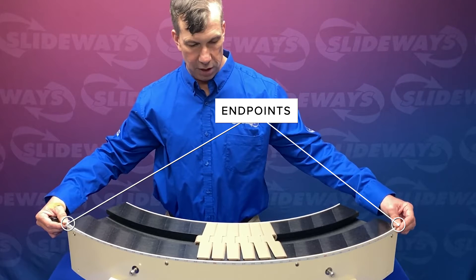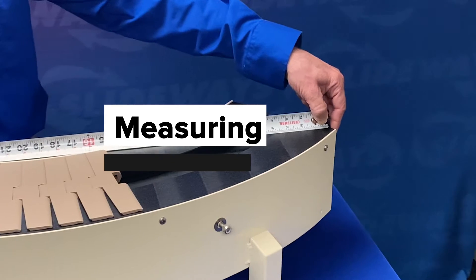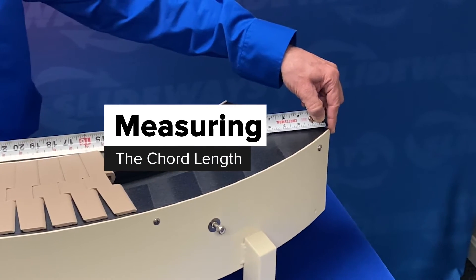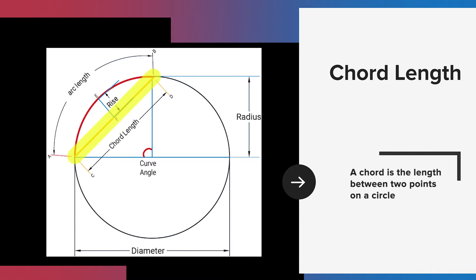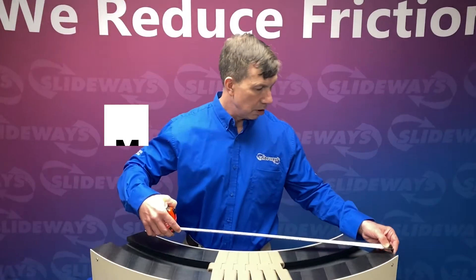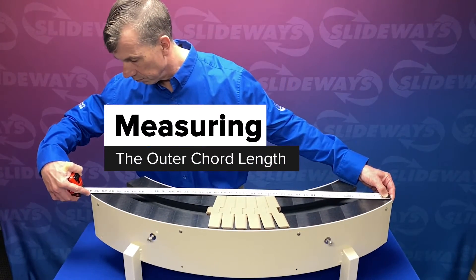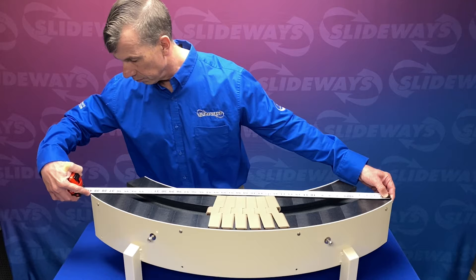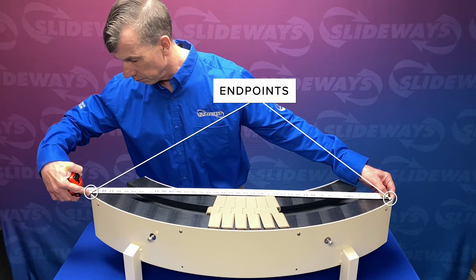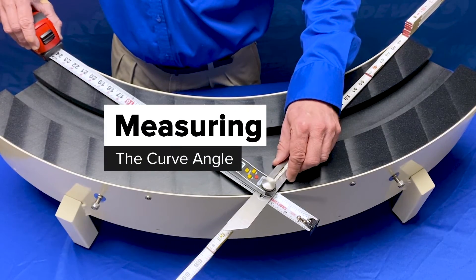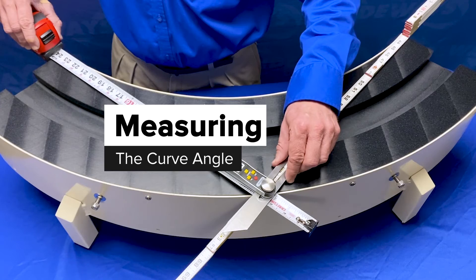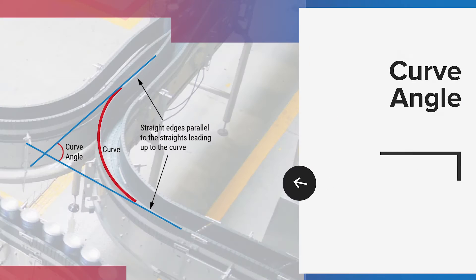Next we'll measure the chord length. What is a chord? A chord is the length between two points on a circle. For this you'll want to take a straight edge or tape measure and measure in a straight line from endpoint to endpoint.